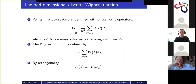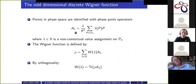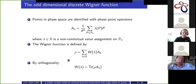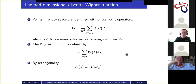The phase point operators have nice properties: they form an orthonormal basis for the space of Hermitian operators, which means any density matrix rho can be expanded in this basis. The coefficients in this expansion are what we call the discrete Wigner function. Since these operators are orthonormal, if you multiply by a phase point operator and take a trace, you can extract the coefficients. So this can be taken as the definition of the discrete Wigner function.